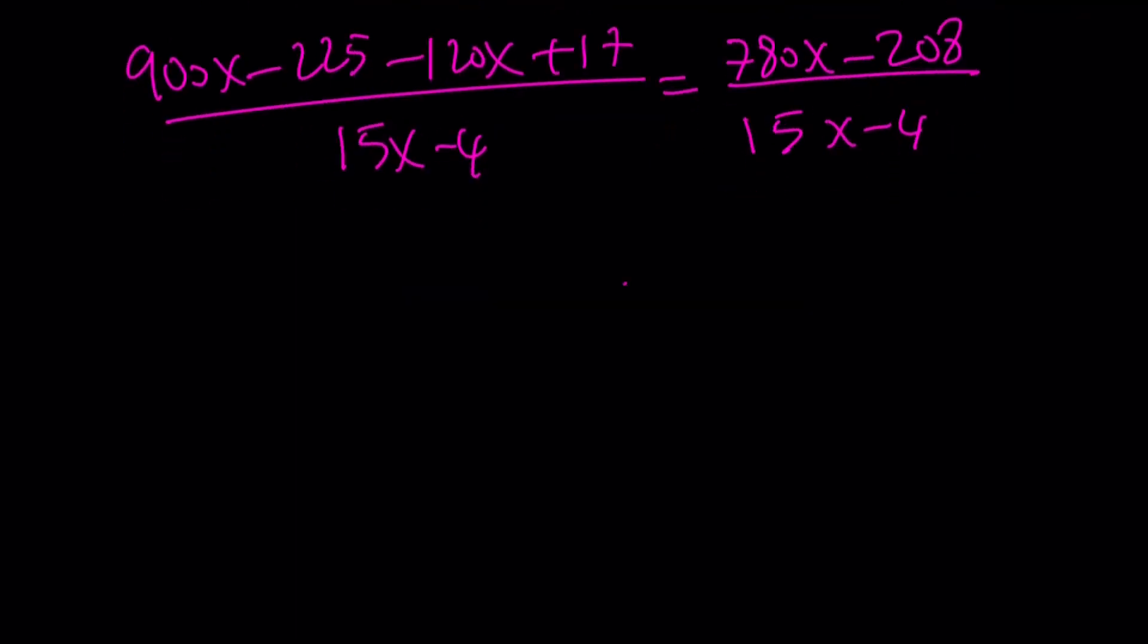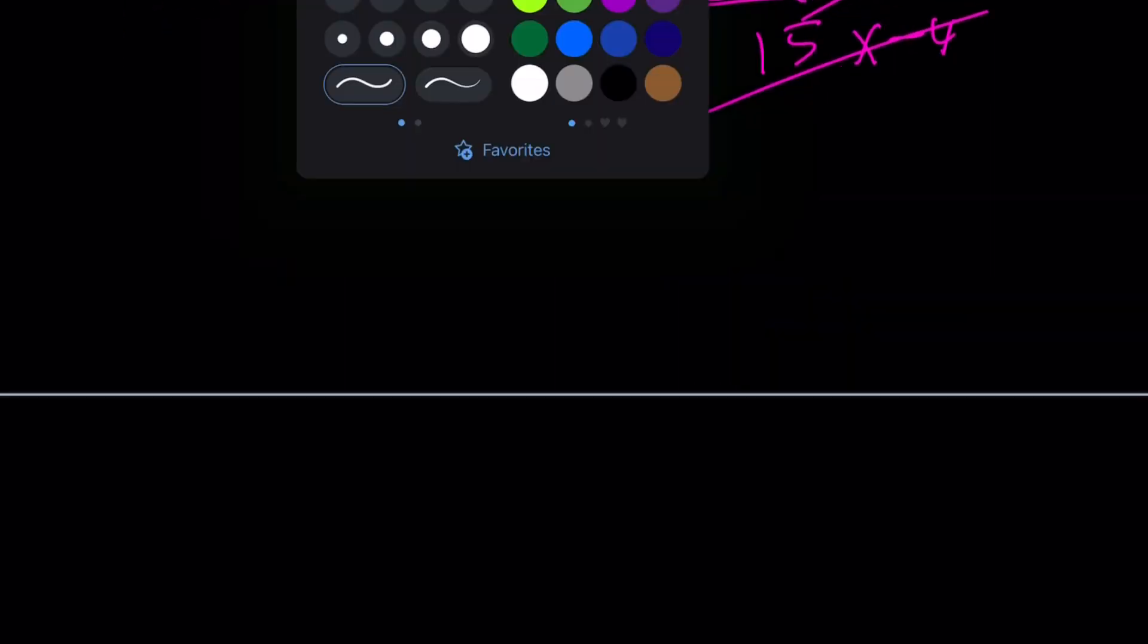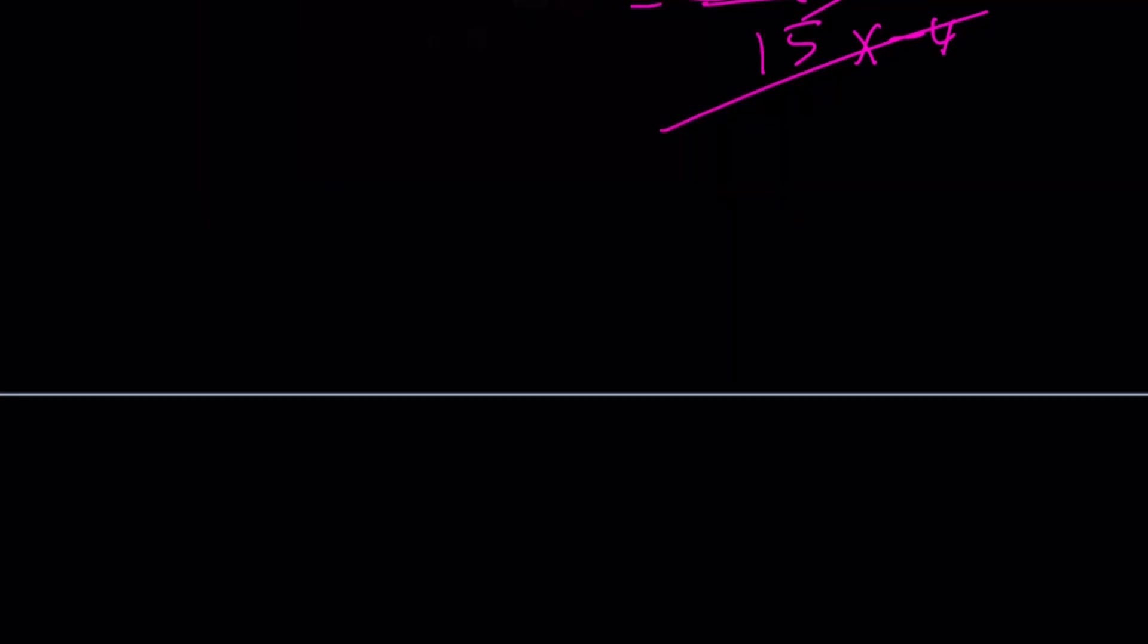And finally, this is going to give us 780x minus 208 divided by 15x minus 4. And luckily, our numerator is 52 times 15x minus 4. Because if you factor out a common factor, that is going to be 52. And 15x minus 4 cancels out, and the answer becomes 52. And that will be our third method. So we're going to go ahead and talk about the second method next.